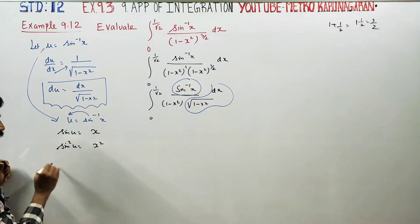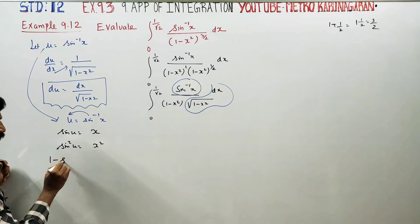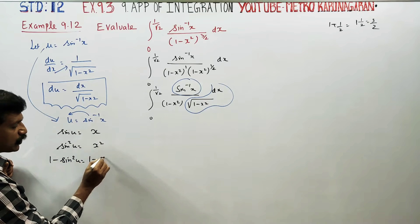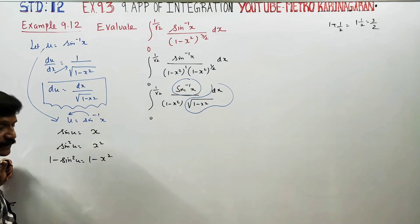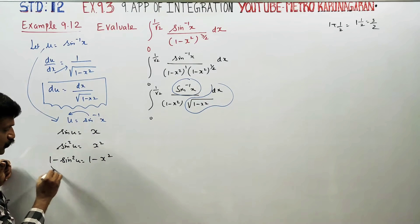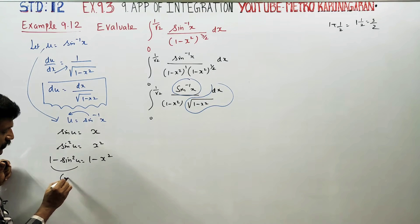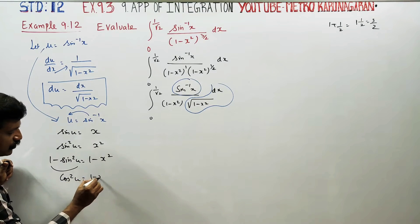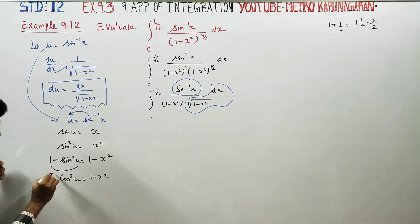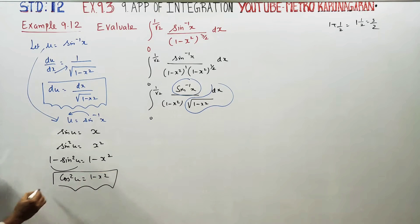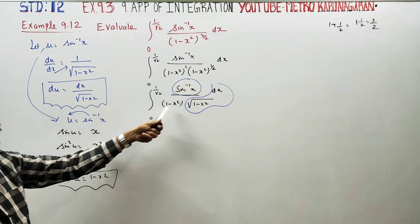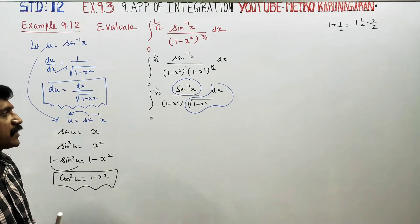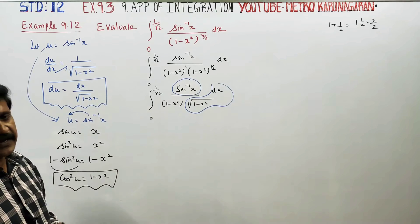We also need to handle 1 minus x². Since u = sin⁻¹x, we have x = sin u, so 1 minus sin²u equals 1 minus x². Therefore cos²u equals 1 minus x². We now replace 1 minus x² with cos²u.